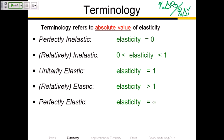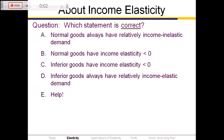Clicker question: which of these statements about income elasticity is correct? Normal goods always have relatively income inelastic demand. Normal goods have income elasticity less than zero. Inferior goods have income elasticity less than zero. Inferior goods always have relatively income elastic demand. Or E, that is October 1st. We knew that with normal goods an increase in income causes quantity demanded to go up, and with inferior goods an increase in income causes quantity demanded to go down. Talk to the person next to you and see if you agree — you can change your answer until I call stop.